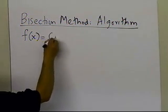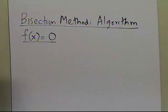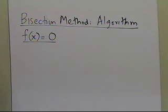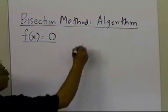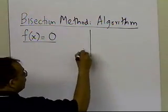What we're doing is trying to find the root of the equation f(x) = 0, or in other words, you might say that you're trying to find the zero of the function f(x). Either way is a correct way of saying it.